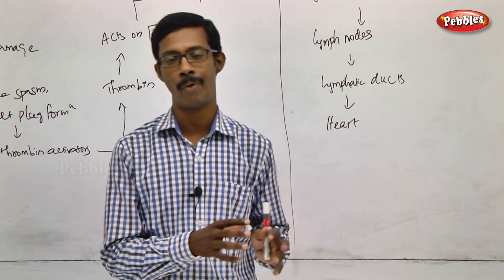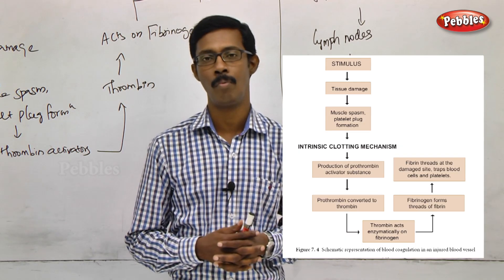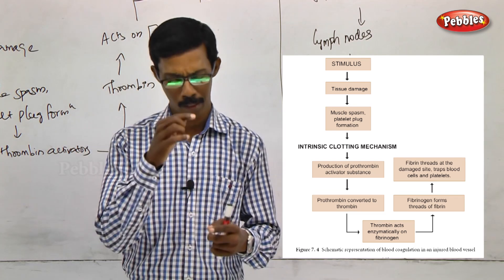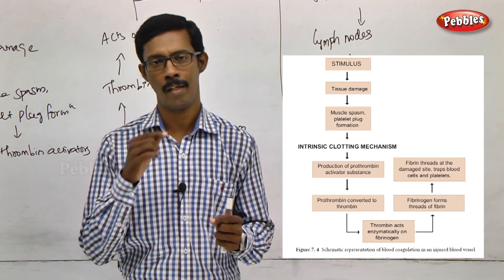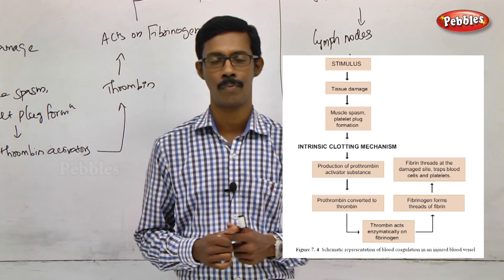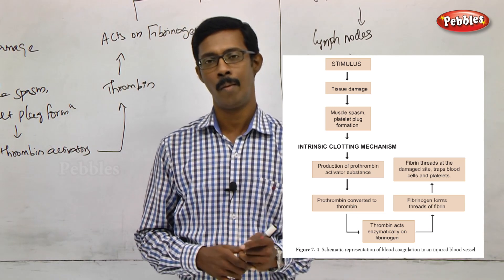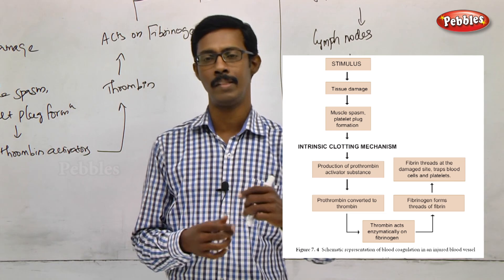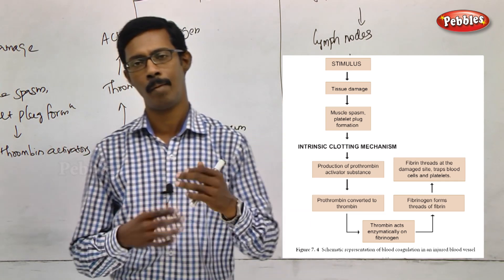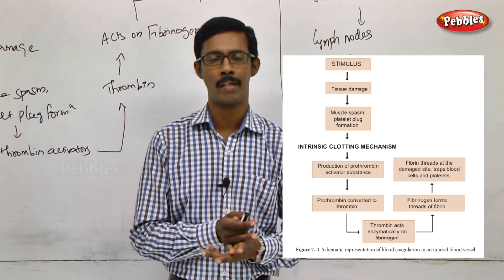Blood clotting occurs because of the coagulation process. Coagulation works because of coagulation factors, which are proteins. In our blood, there are also platelets that participate in blood coagulation. When tissue is damaged, platelets signal other cells of the system.